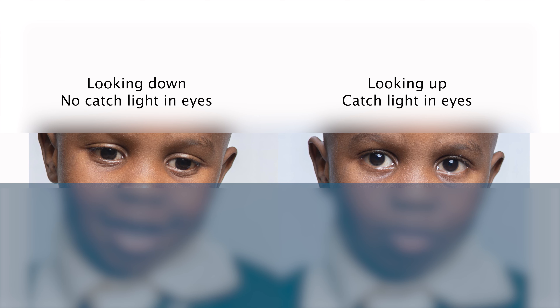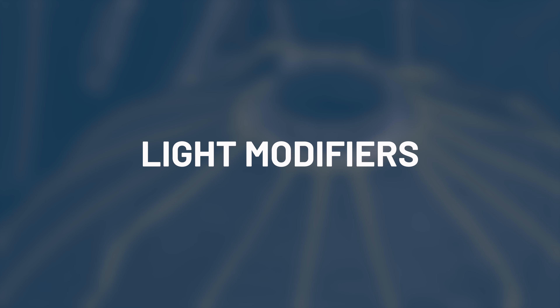One thing you need to note about the sitting and standing position of your subject, especially the head position — you must make sure that they at least look up a little bit, because the reflection of the light in their eyes produces a nice catch light. If they look down that reflection will not be caught in the eyes and your eyes will look dark with no sparkle and no life.